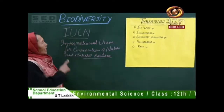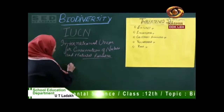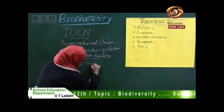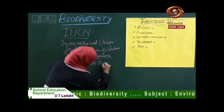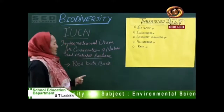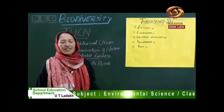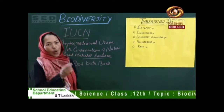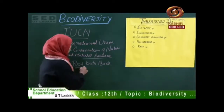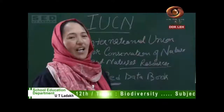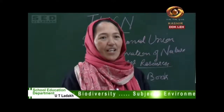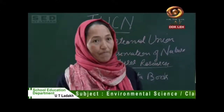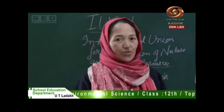What does IUCN do? IUCN publishes a book called the Red Data Book. In this Red Data Book, IUCN describes and gives the list of endangered species of plants and animals. The red color is used as an alarming signal so that we conserve these wild plants and animals before they go extinct.